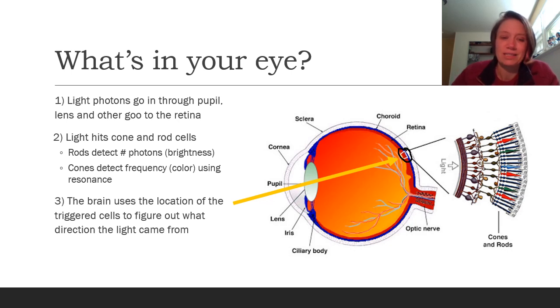But the other really interesting thing in physics is that the brain can tell where the light came from based on which of these cells are triggered. So based on the fact that that cell near the top of your retina was triggered, your brain is able to work its way backwards and figure out what direction the light came from and that's a really important adaptation because we can tell where things are located based on where their light came from.